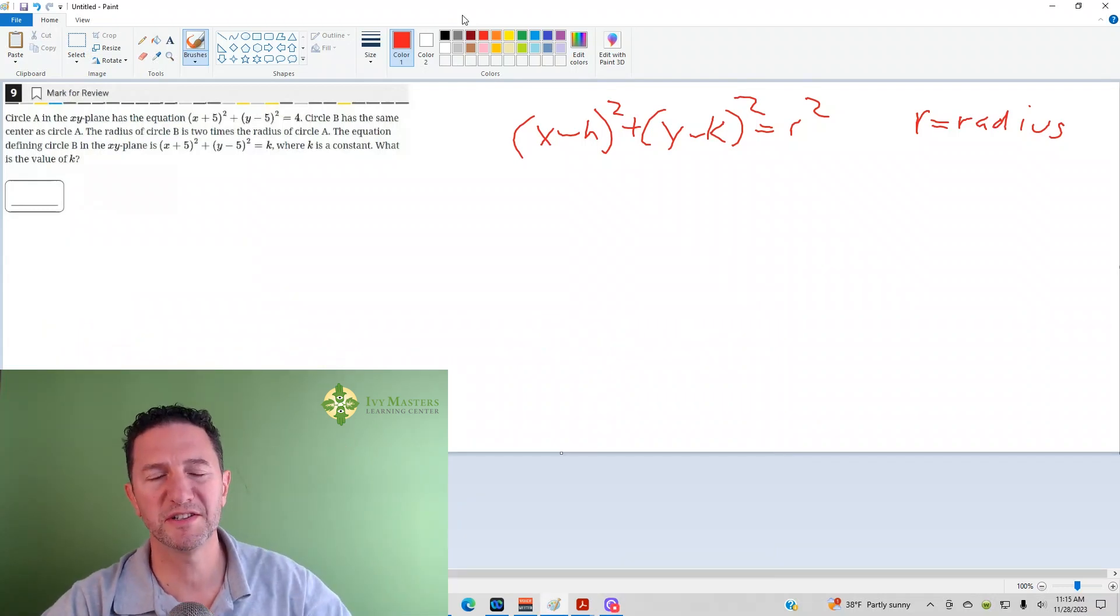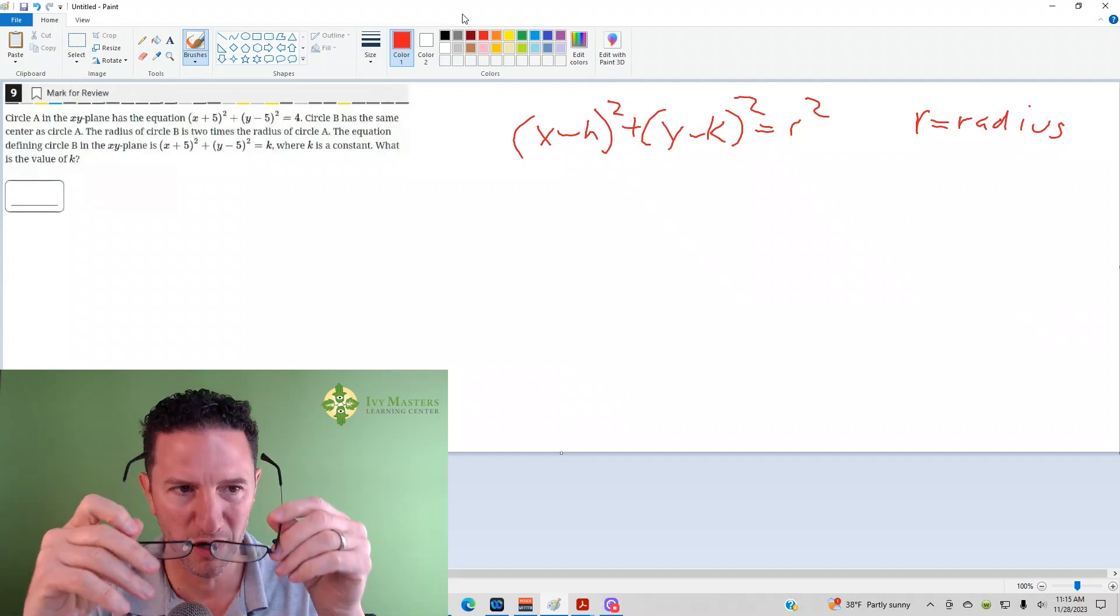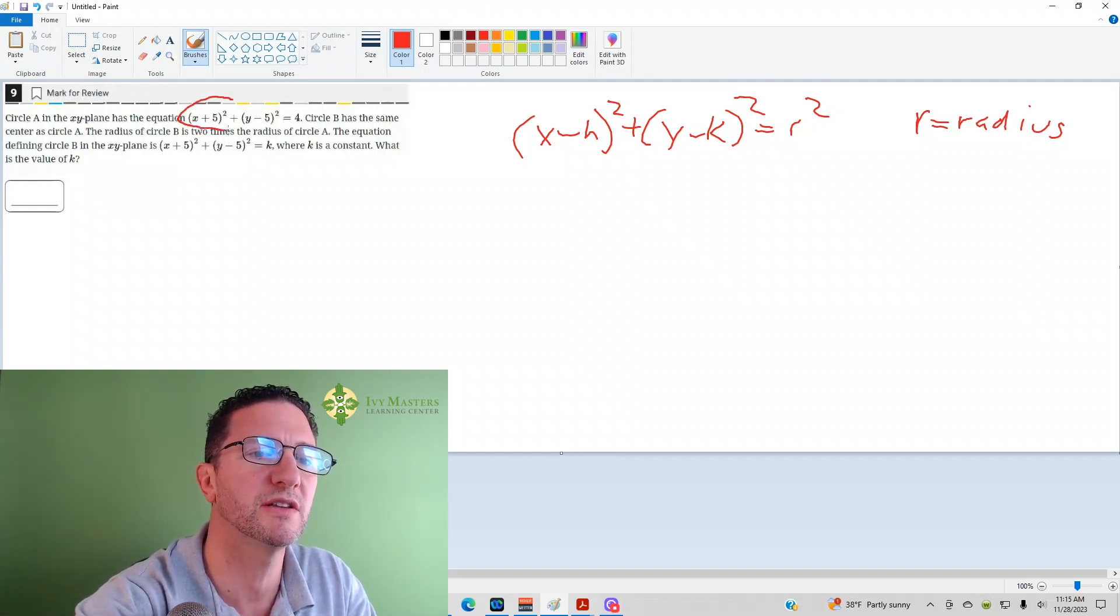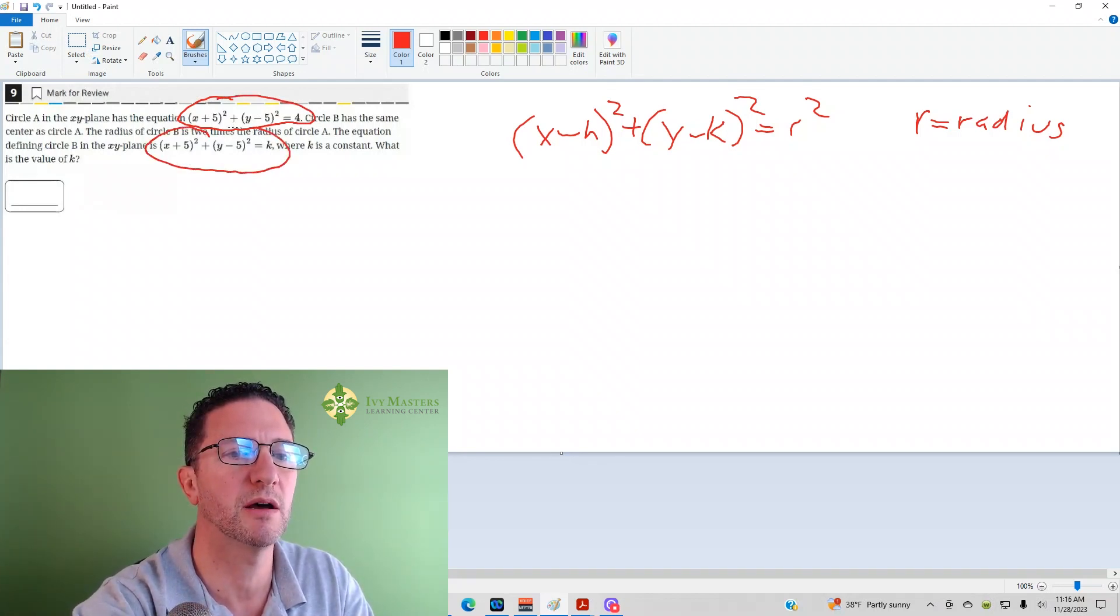This is the ninth question from the Digital SAT Test 1 Module 2 from the Blue Book app, the harder set of math questions. It gives you this equation in standard form for a circle, and it says this one has double the radius.